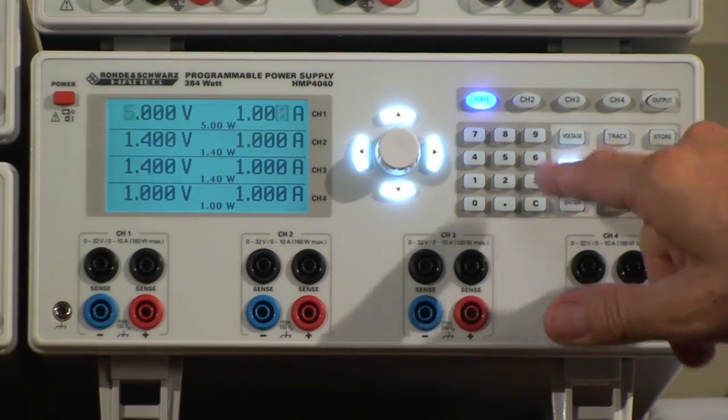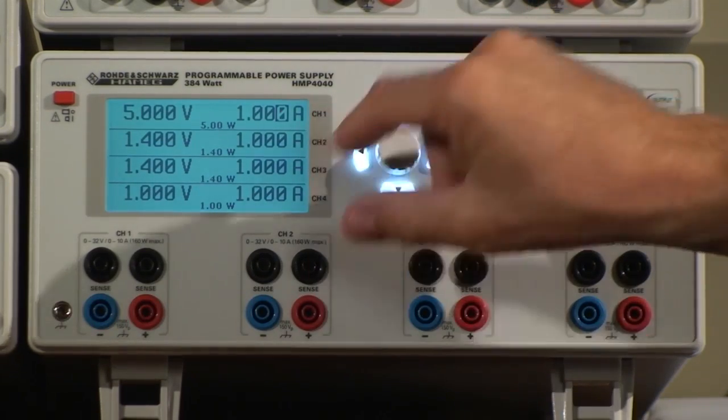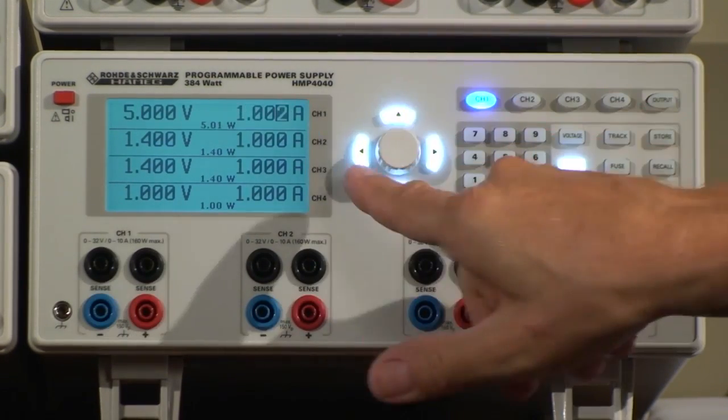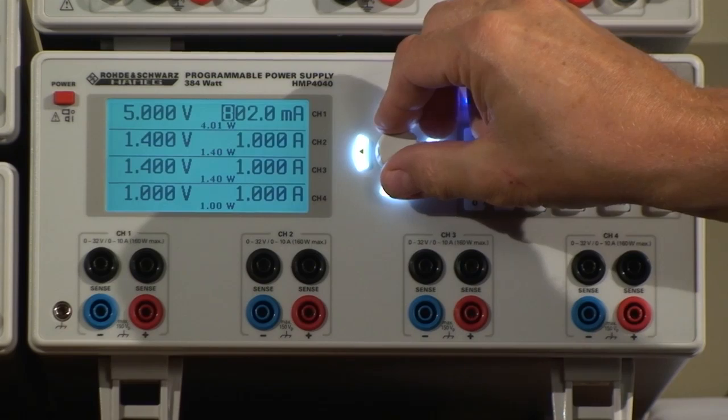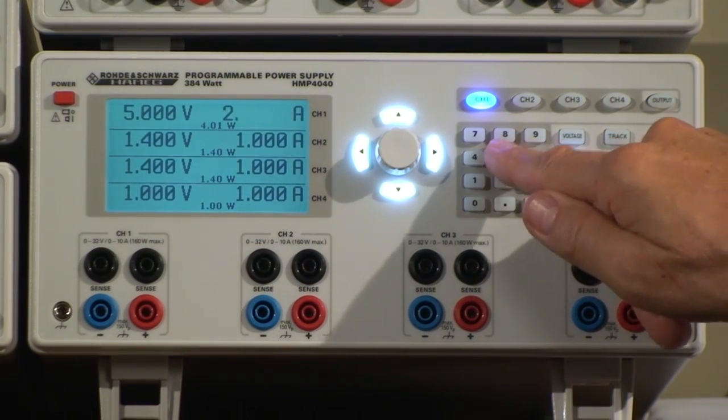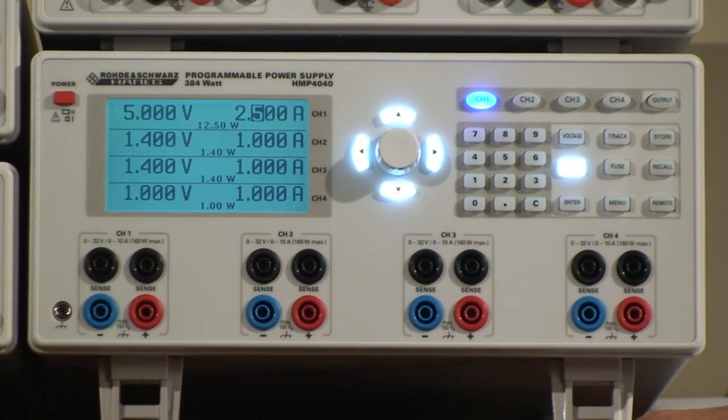I can do the same with the current on the same channel. I can change it by turning the knob here, use the cursor, or I can say 2.5 amps. That goes for the rest of the channels, of course.